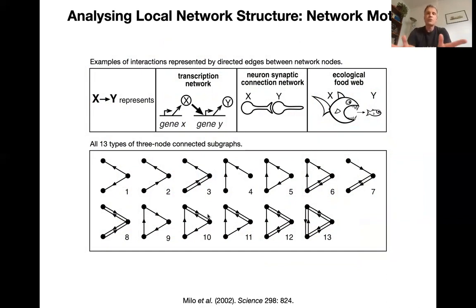So what you do to identify a motive is you first of all, you enumerate, for example, for three nodes in a network, all the different connections that you can imagine. And here in the lower part of the slide, you see the 13 different types of connected subgraphs that you can have. This is the complete set of interactions of directed graphs between three nodes. There are 13 different combinations.